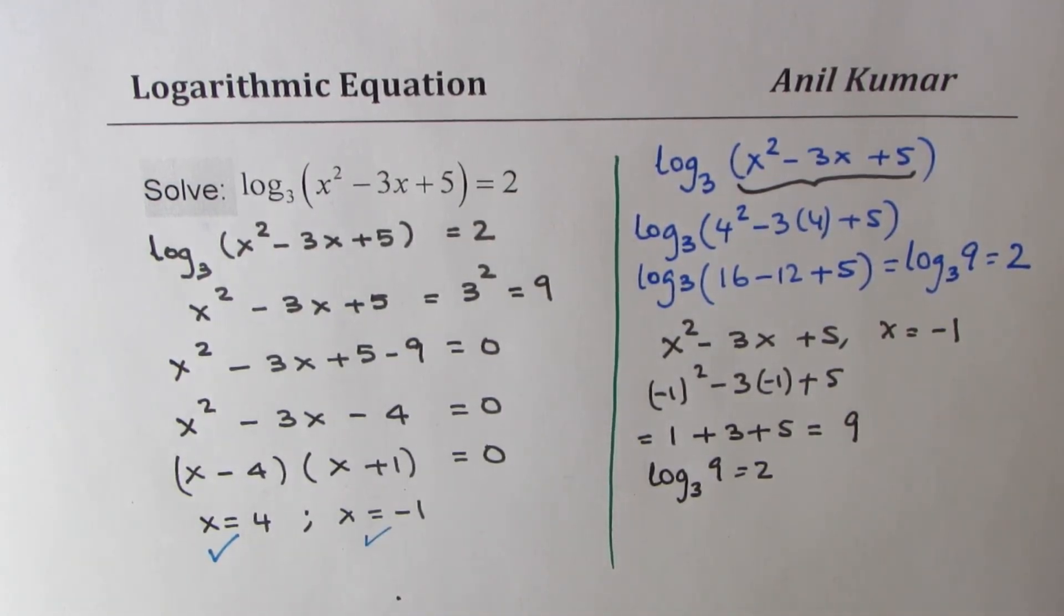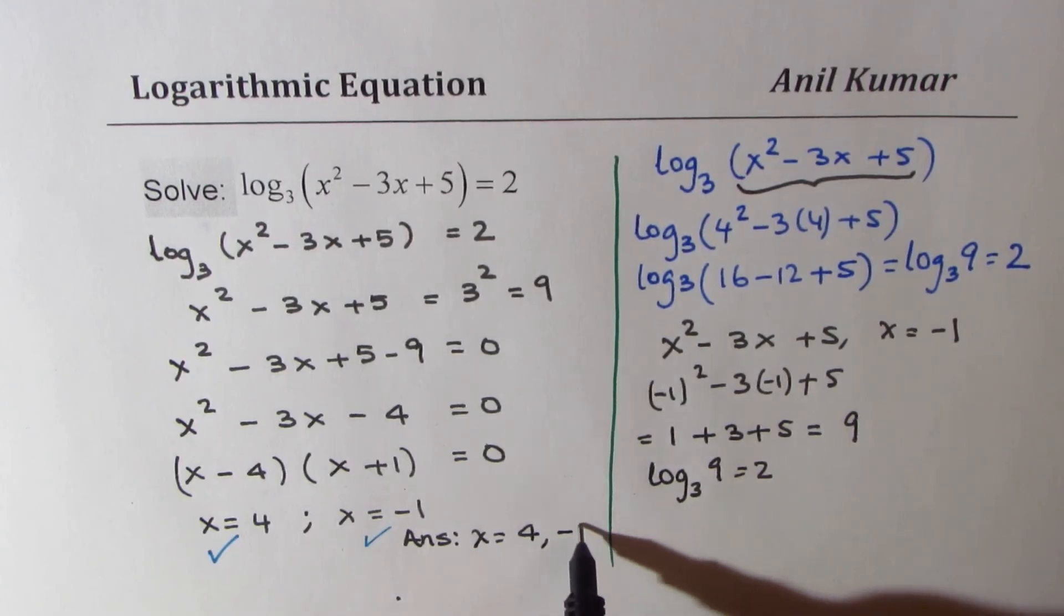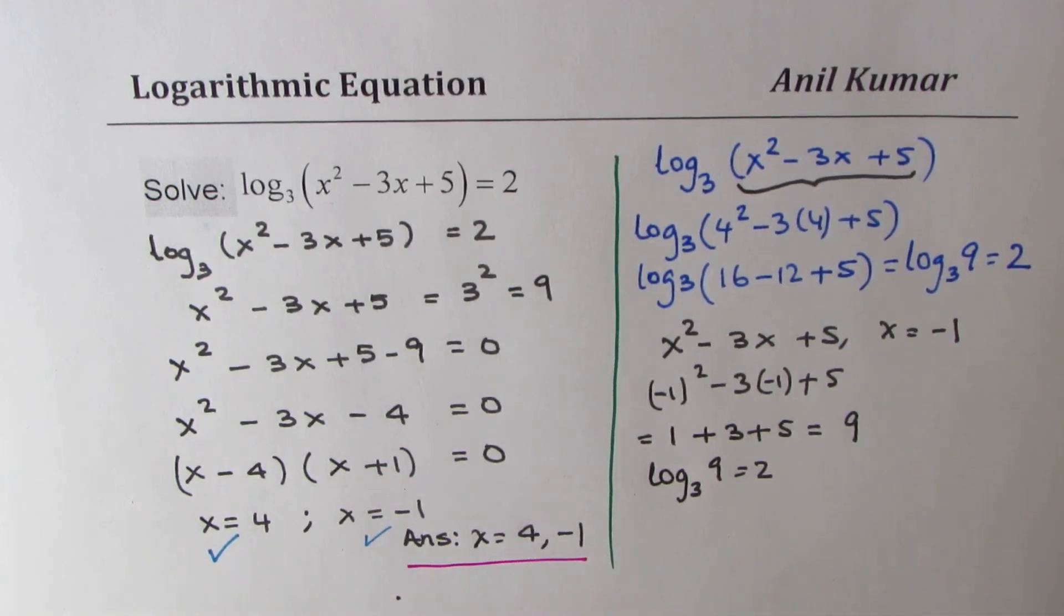So we have our answer here. Now we can surely write that the answer is x = 4 and -1. So that is how you could solve and also check for extraneous roots in such questions.